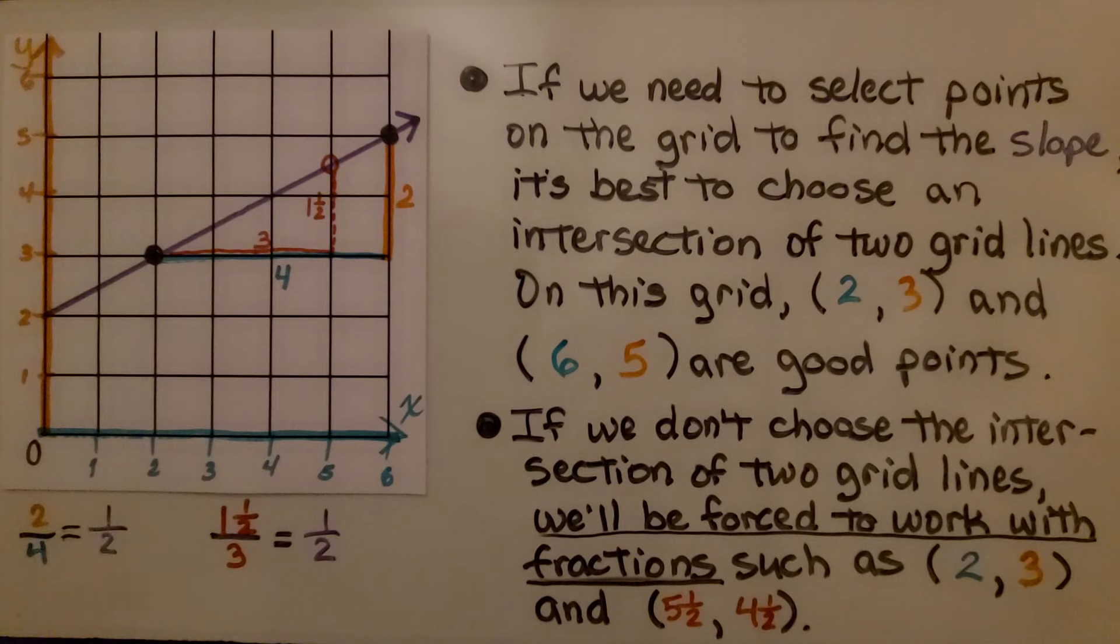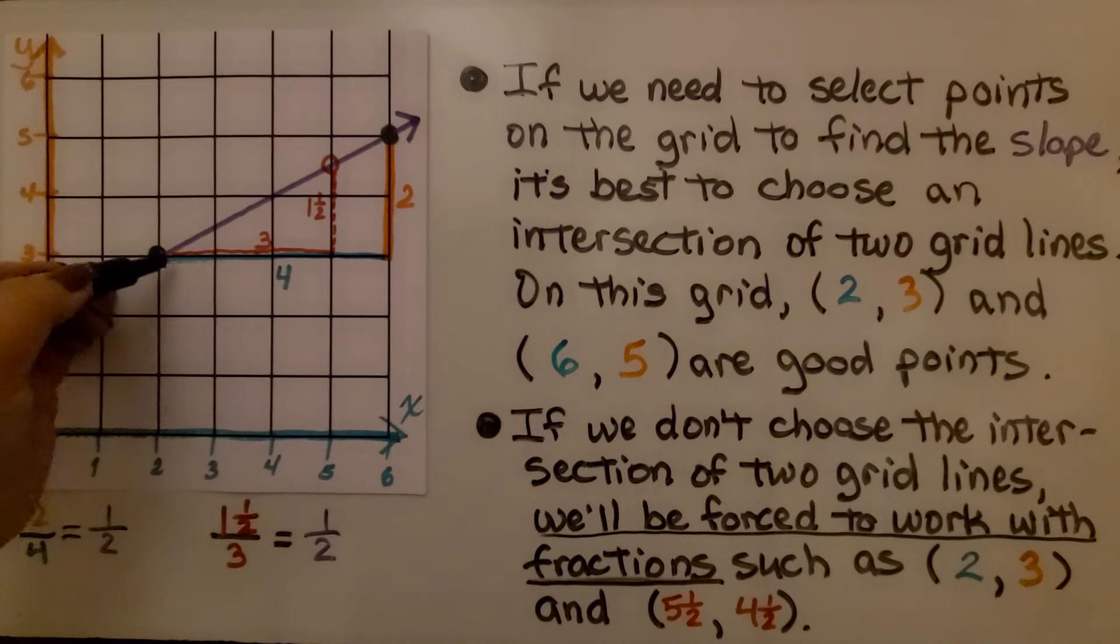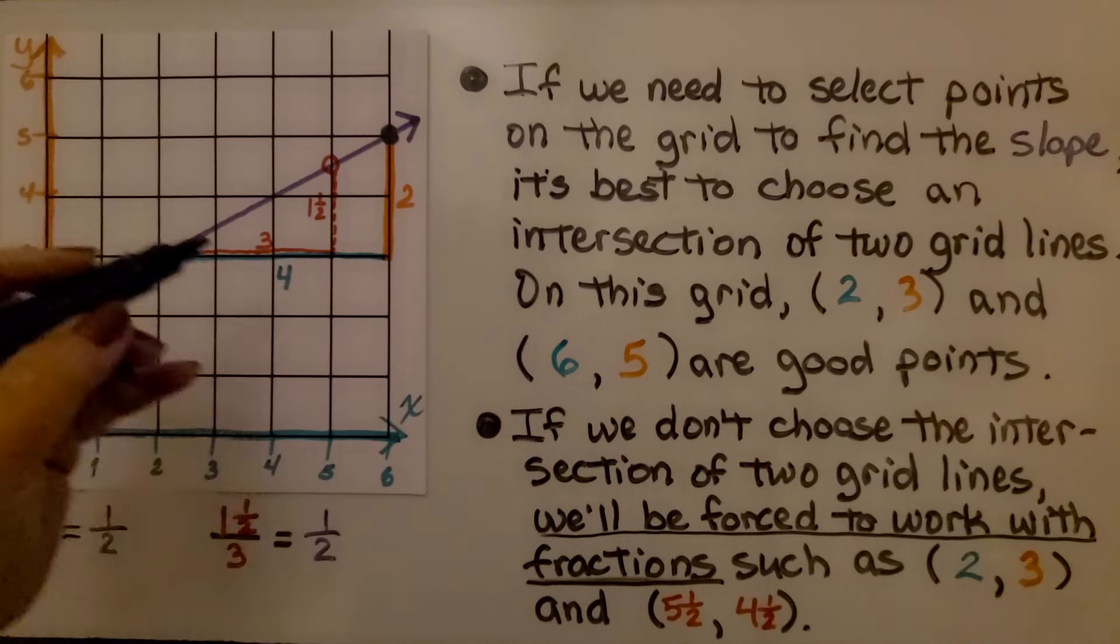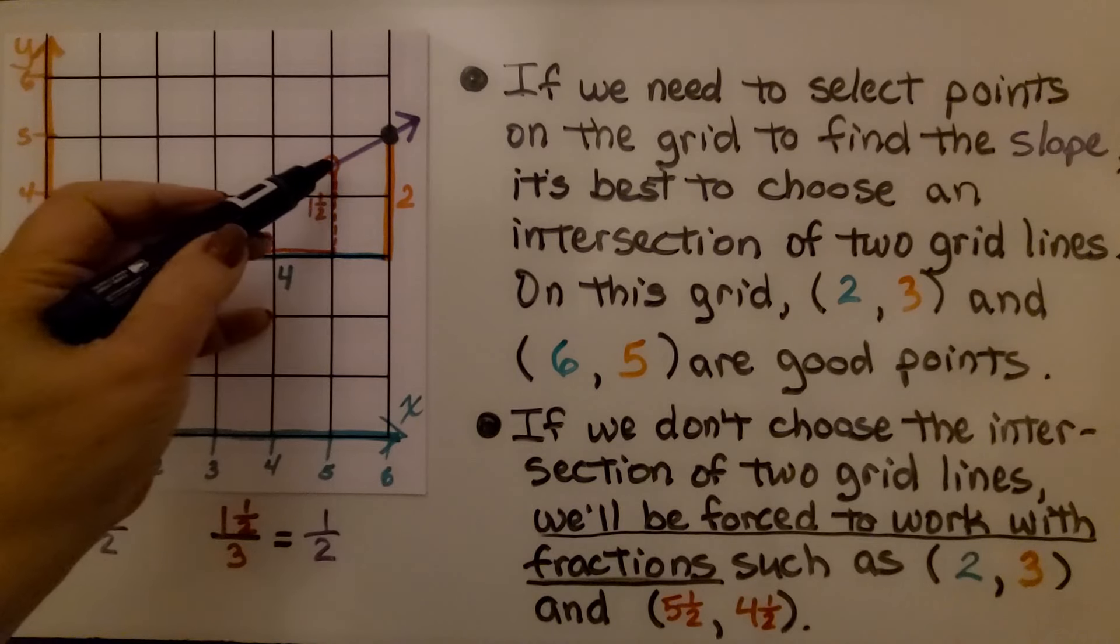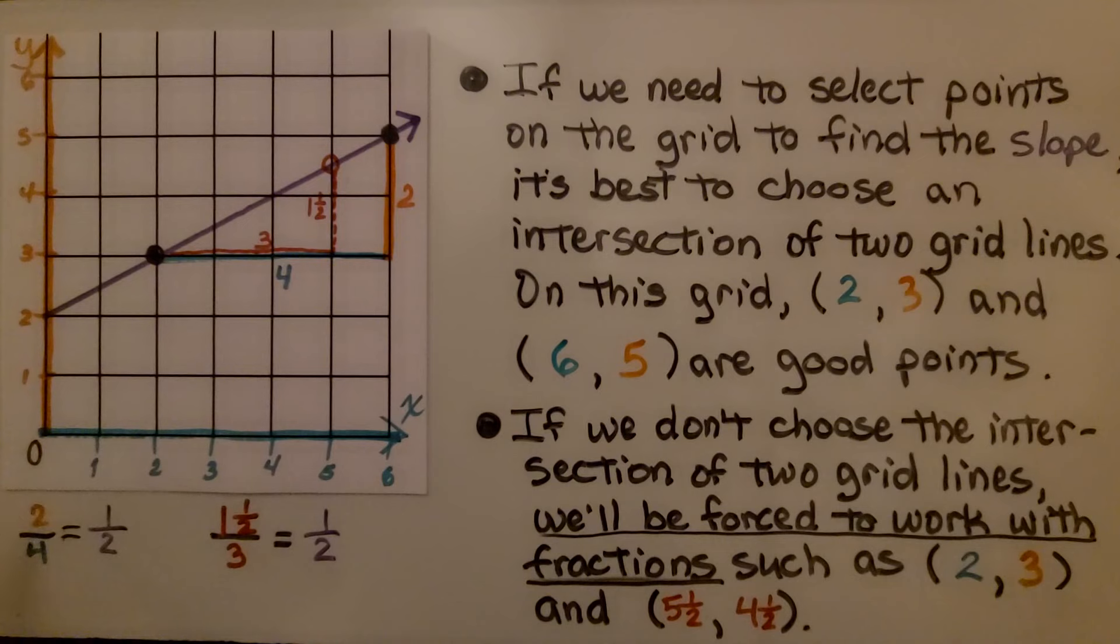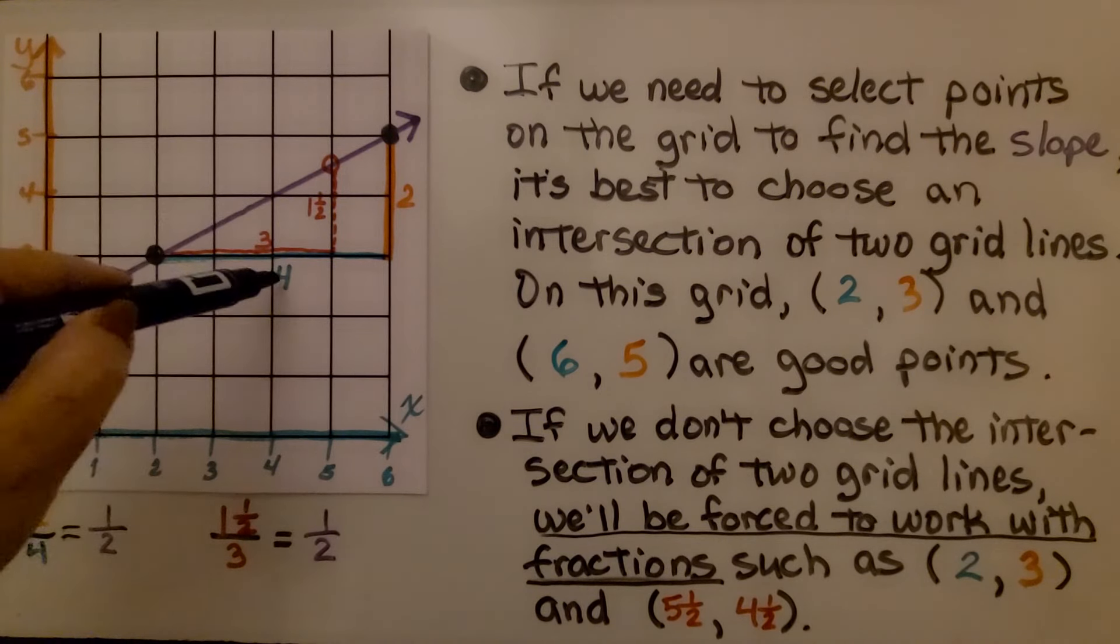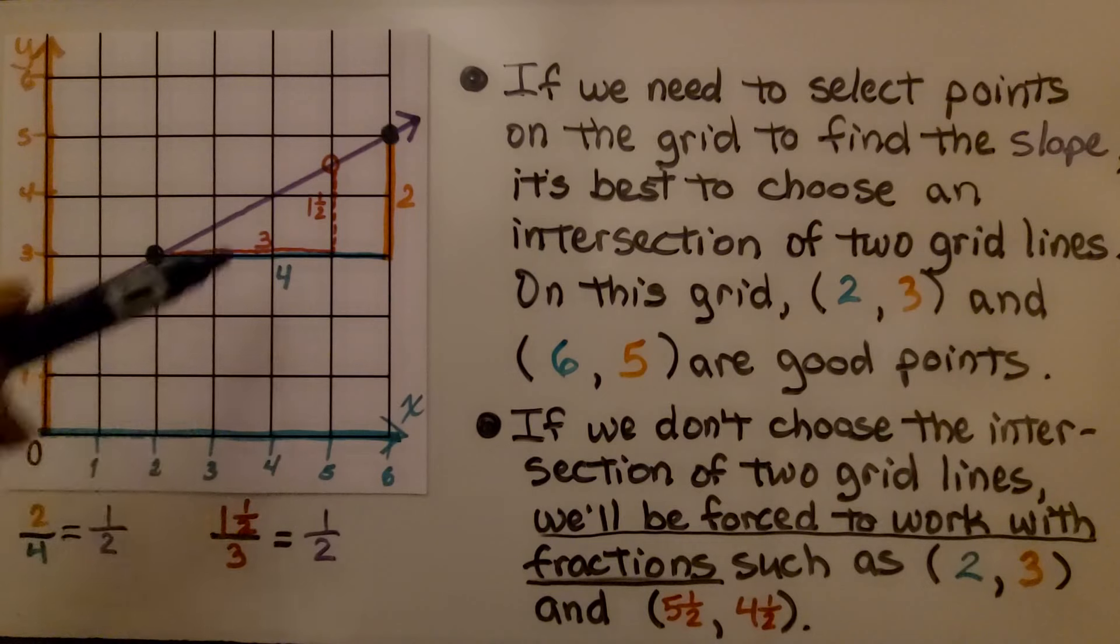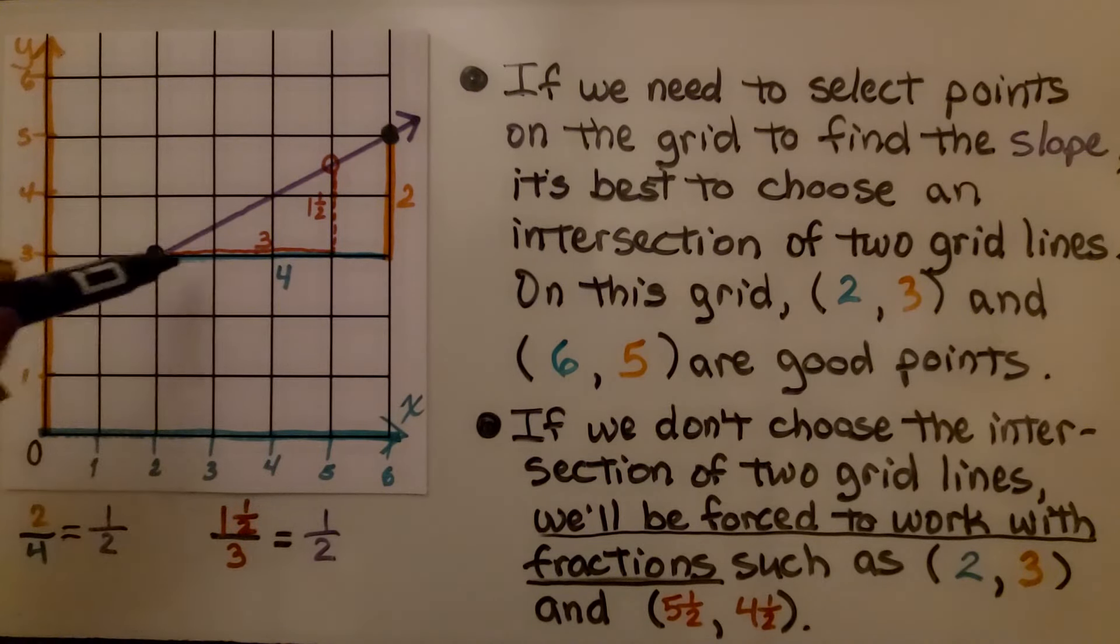If we don't choose the intersection of two grid lines, we'll be forced to work with fractions such as 2 for x, 3 for y, and 5 and a half for x and 4 and a half for y. It's easier to do 2 is the rise over 4 is the run to get one half than it is to do 1 and a half over 3 to get one half. Use the grid lines where they intersect, and you'll be dealing with integers that are easier to find the slope.